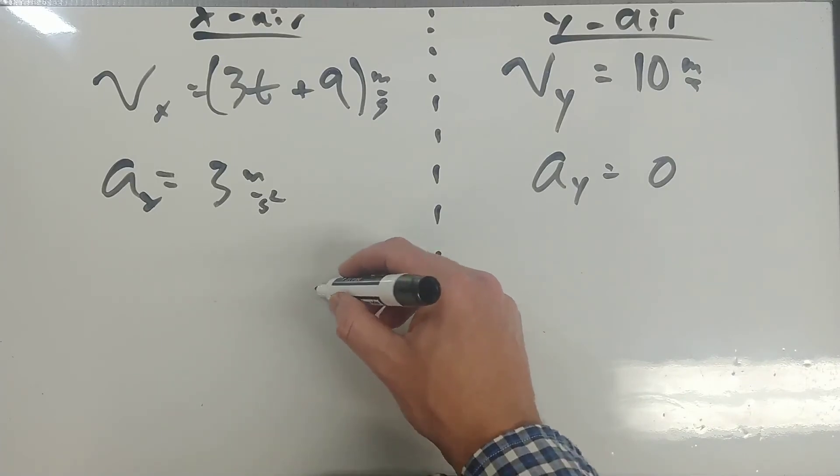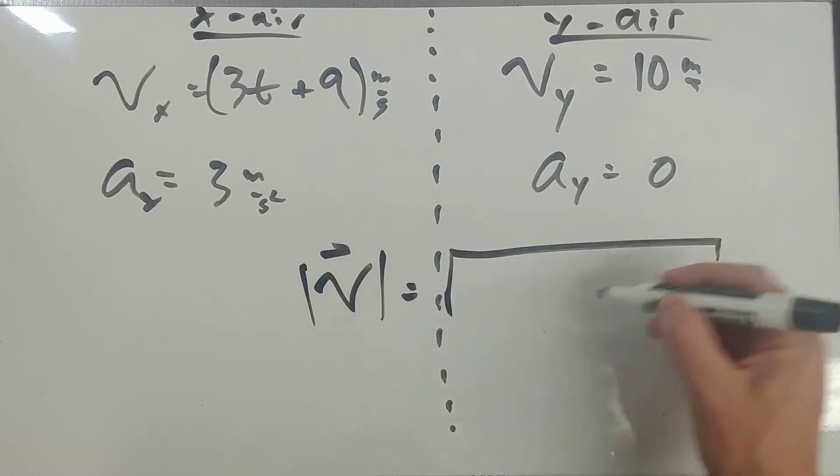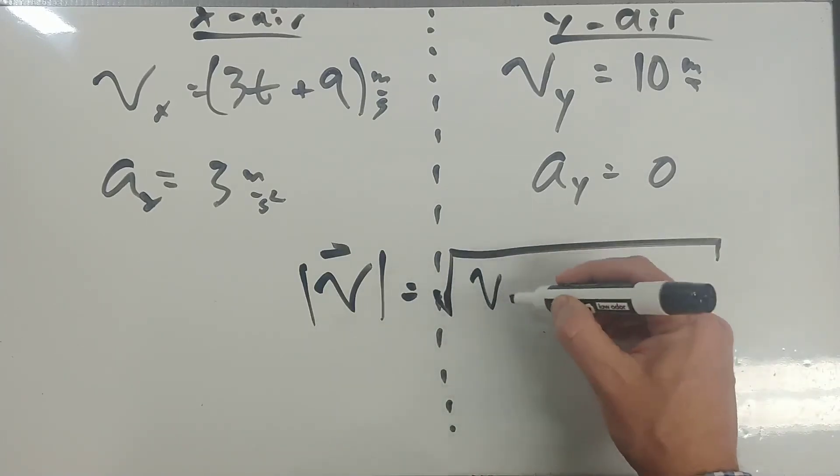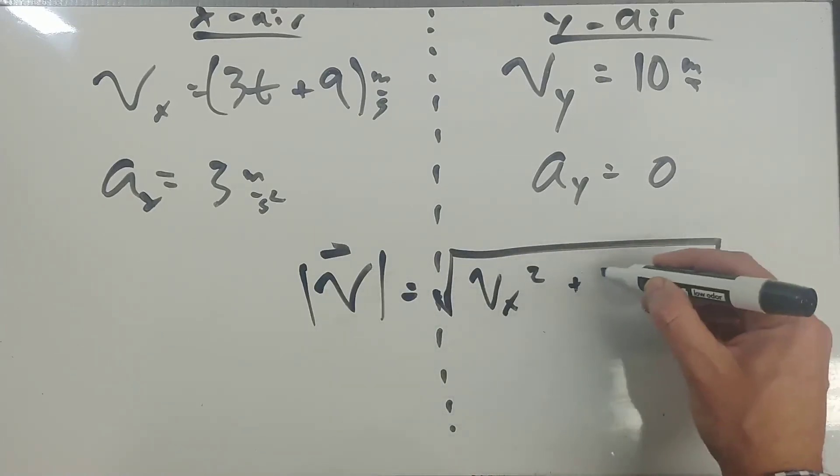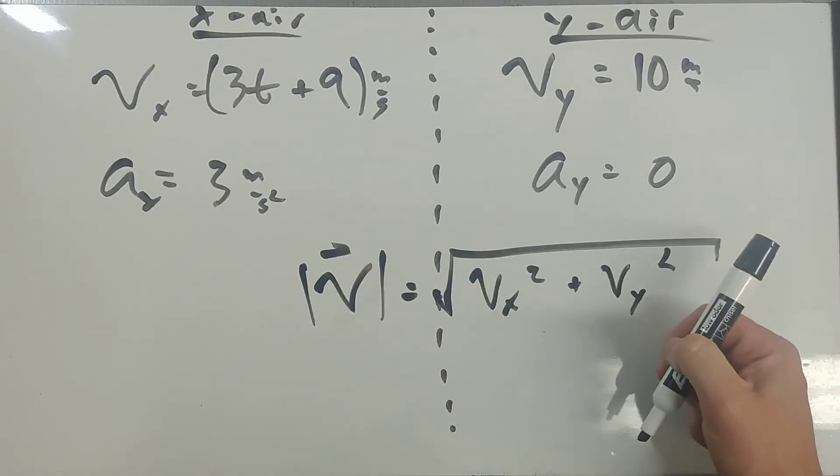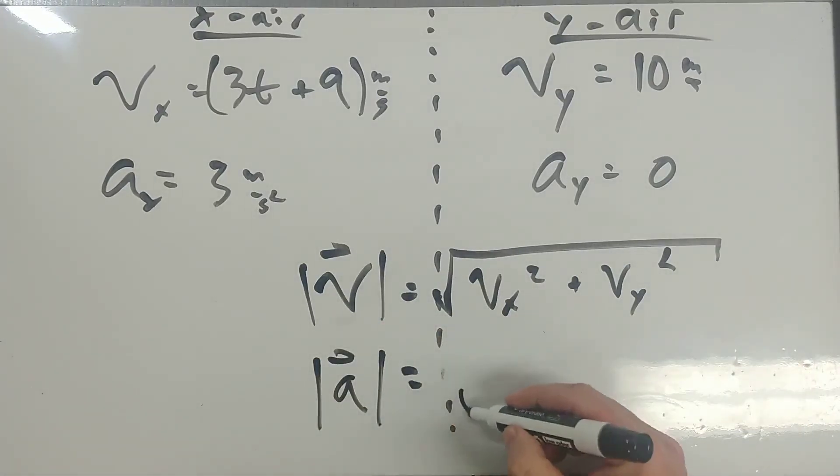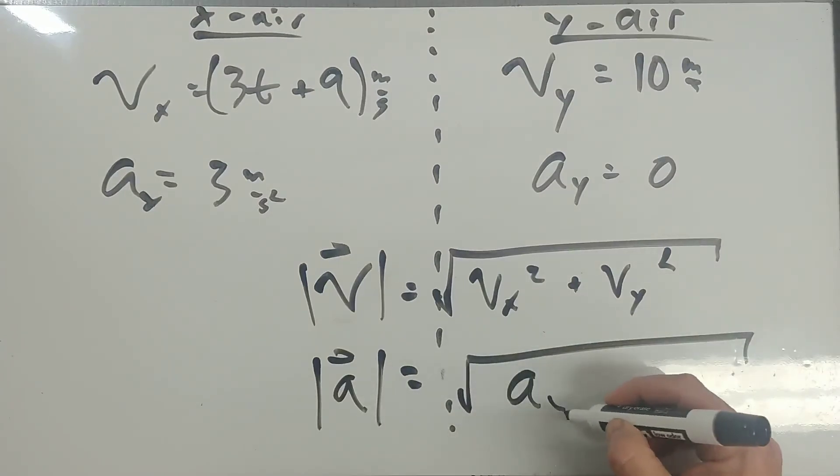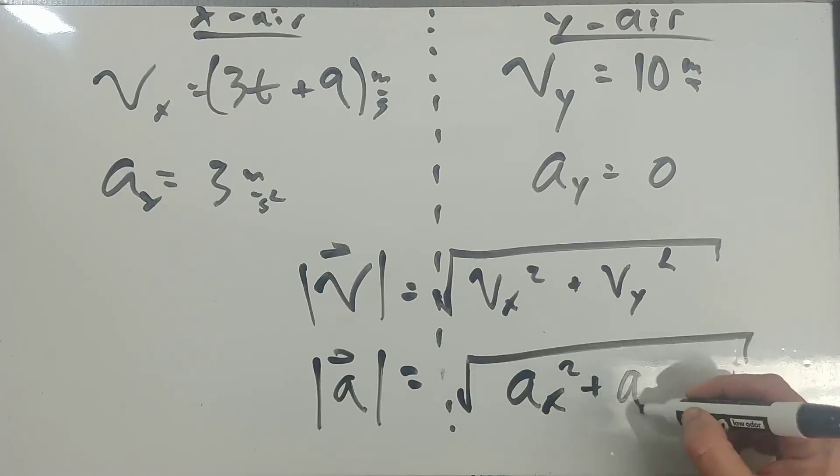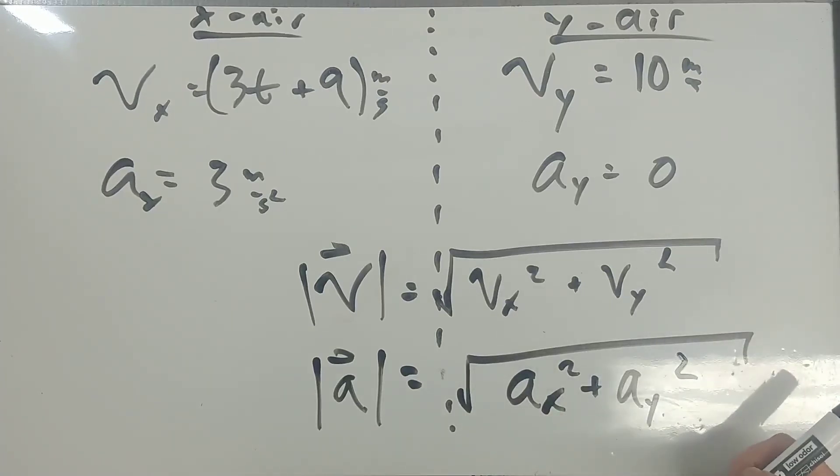The velocity, the magnitude of the velocity, is equal to the square root of the components squared. Magnitude of the acceleration is equal to the square root of the components ax squared plus ay squared.